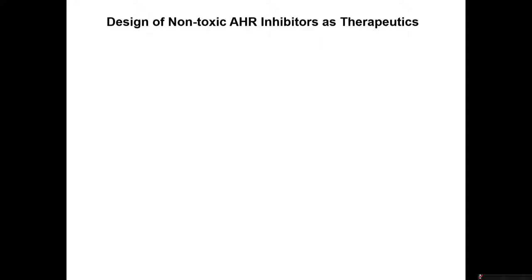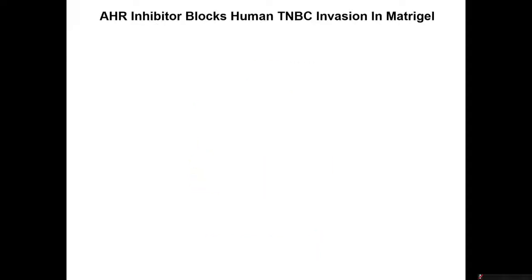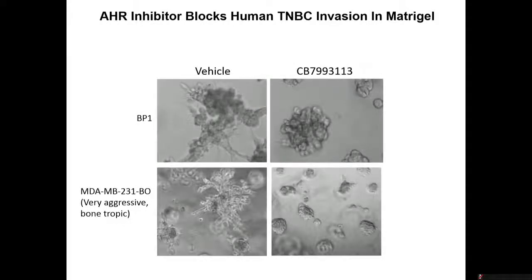Now that we've shown profound biologic outcomes from taking the AHR down, we want to design a drug that mimics that — which is what we did in collaboration with Hercules, which has licensed our AHR inhibitors. In the interest of full disclosure, I'm a co-founder of Hercules. We use multiple approaches to identify molecules that bind to the AHR with relatively high affinity. This was our first generation drug, we'll call it CB, and the second generation called HB163. In matrigel assays, an aggressive triple negative breast cancer grows with pseudopods, but if you treat with our CB compound, they form nice little round balls. This is the most aggressive tumor we've looked at — a bone-tropic MDA-MB231 — and it behaves well in the presence of CB7993113.